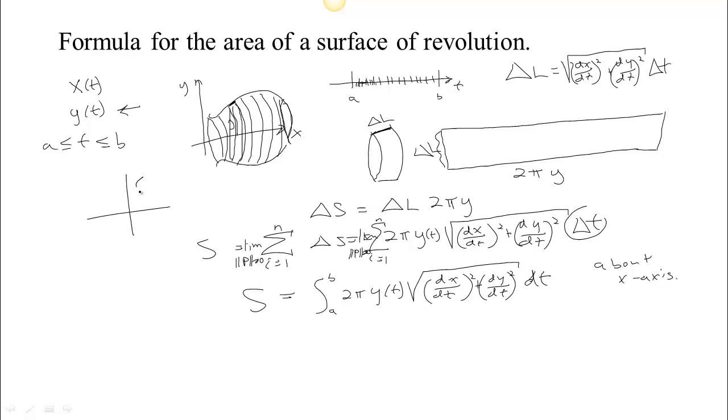If you revolve your curve around the y-axis, and you'll get a vase that stands up like this, you'll still slice it up in t, you'll still get these ribbons, but now the radius of a single ribbon is going to be x. So the distance around that ribbon is going to be 2 pi x. So you get this formula, the integral from a to b of 2 pi x of t times the square root of, still have the same length element.